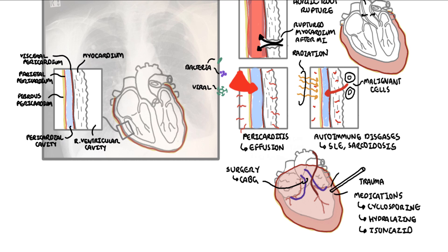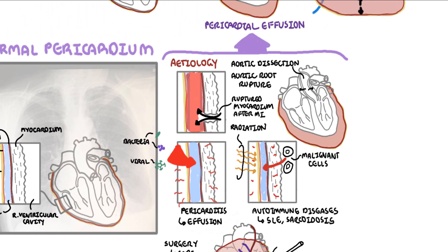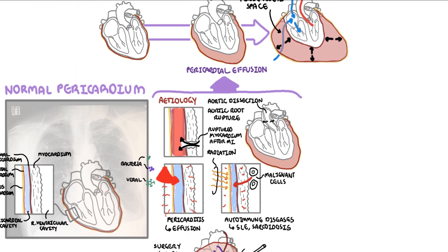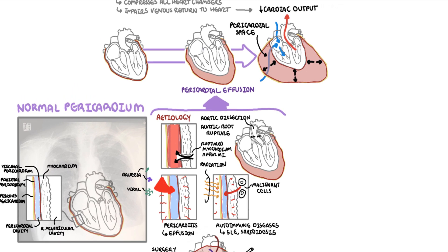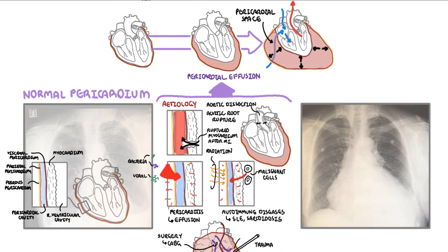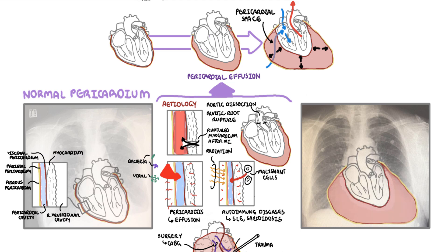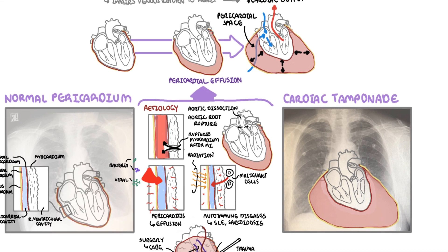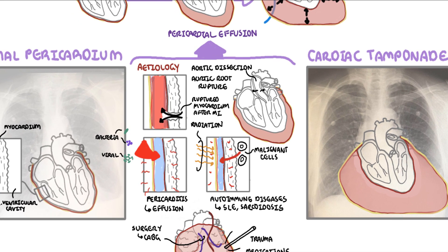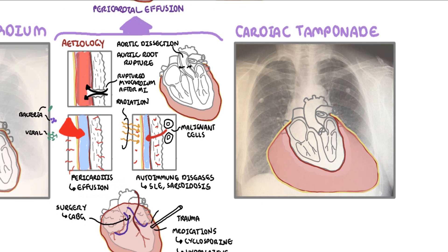Pericardial effusion can progress and become a cardiac tamponade. It is not only the amount of fluid in the pericardium that causes a tamponade, but also how fast the fluid accumulates. An acute pericardial effusion is life-threatening, whereas a chronic slow accumulation of pericardial fluid is more benign but may eventually manifest with symptoms as it grows. Here is a chest x-ray of the same person who has developed cardiac tamponade — note the large heart size.